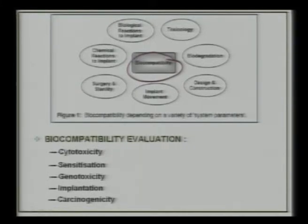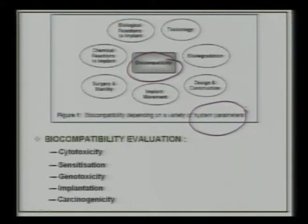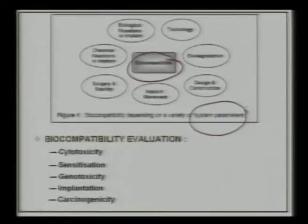It is important to know how biocompatibility can be assessed. First, biocompatibility is a system property — it means if your material is biocompatible for a particular application, that does not necessarily mean the same material is biocompatible for another application. For example, a material biocompatible for knee replacement may not be biocompatible for heart valve applications, because the requirement is application-specific.